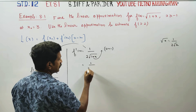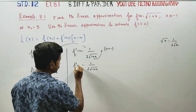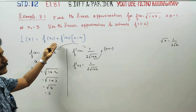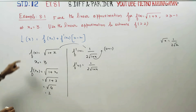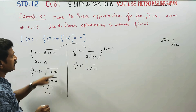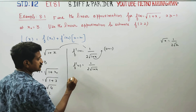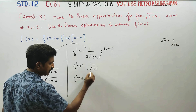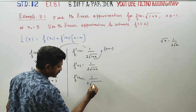f'(x) = 1 divided by 2 root of 1 plus x. This is f'(x). Then f'(x₀) = 1 divided by 2 root of 1 plus x₀.